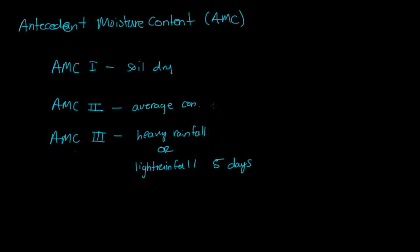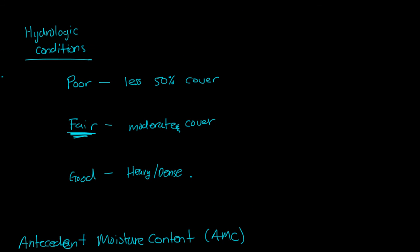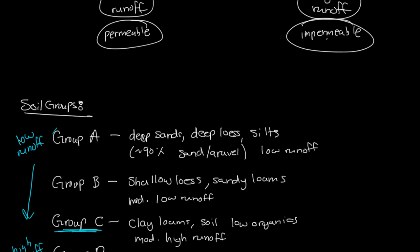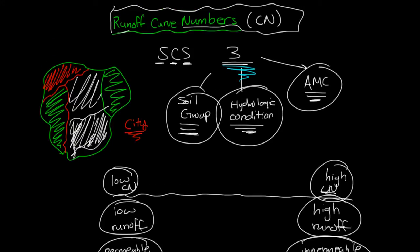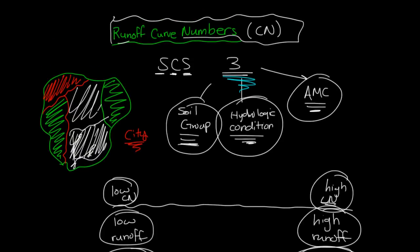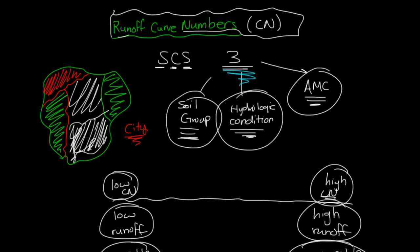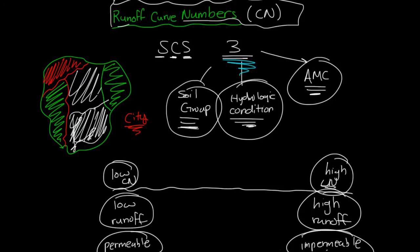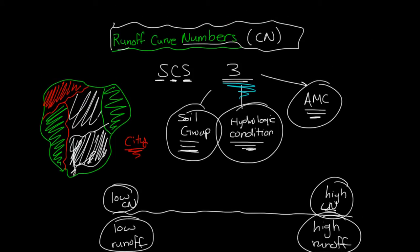AMC two is average condition. So antecedent moisture content, hydrologic condition, and soil groups are the three different things the curve number is dependent on. In the next video, I'll show you a chart we can use to get the curve runoff numbers, and then we'll do an example finding the curve runoff numbers. So see you then.